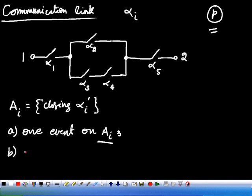You have to find it. Next, find the probability of the event so that there exists a closed path between 1 and 2. When the closed path exists between 1 and 2 as A1 intersection A2 intersection A5, that is if alpha 1, alpha 2, and alpha 5 are closed, we have a closed path.